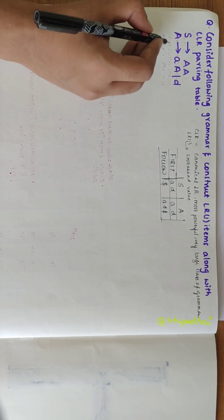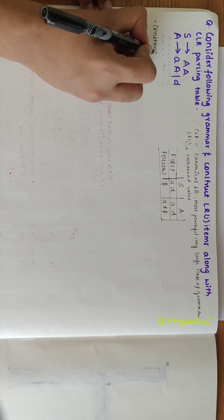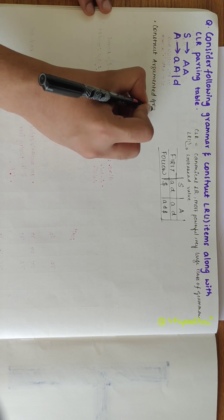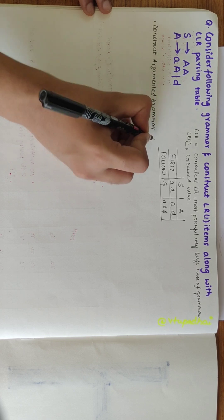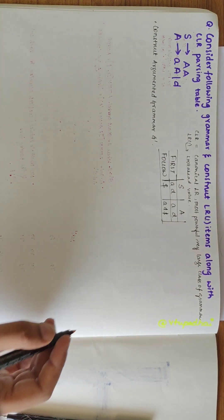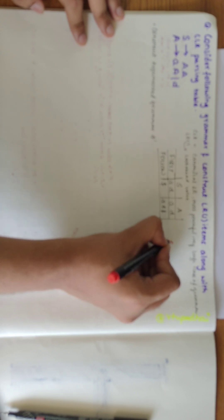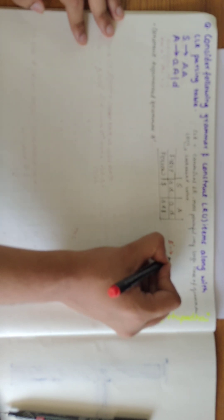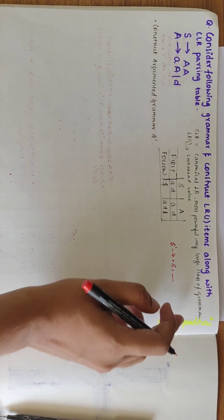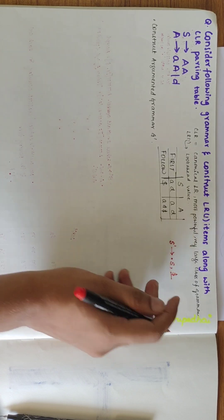Now moving on to the next step, which is to construct the augmented grammar G'. To construct the augmented grammar G', we need to remember that the starting state should begin with the production S' derives dot S, and there would be a lookahead here. Since it is LR1 items, there is one lookahead, so we write $ here initially.